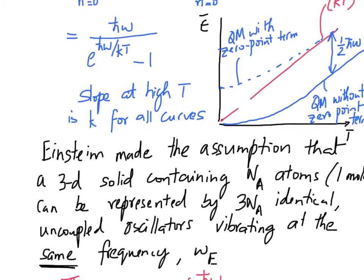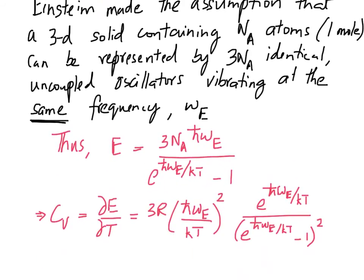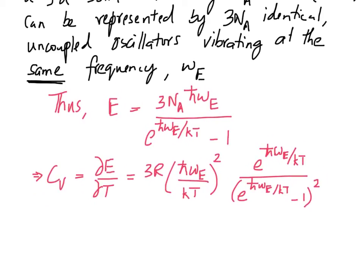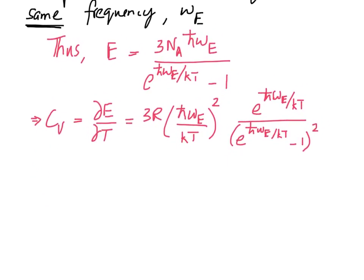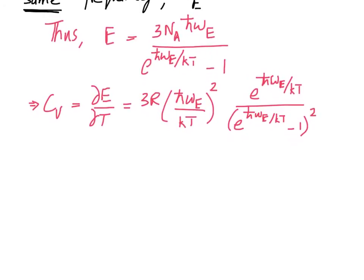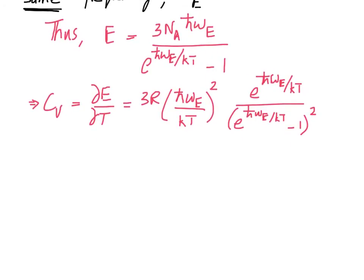So Einstein makes that leap, calculates the total energy of the system composed of a collection of 3 N_A oscillators, and then the next step is to find the first derivative of the energy with respect to temperature and we get our specific heat expression, which is that.